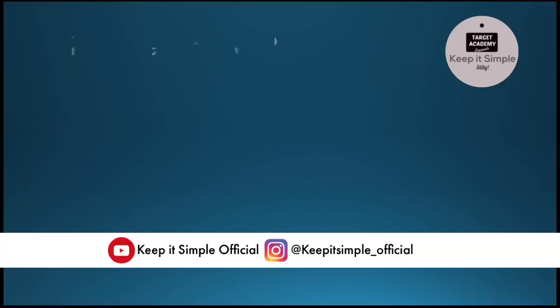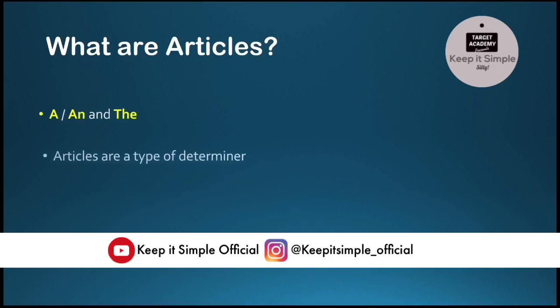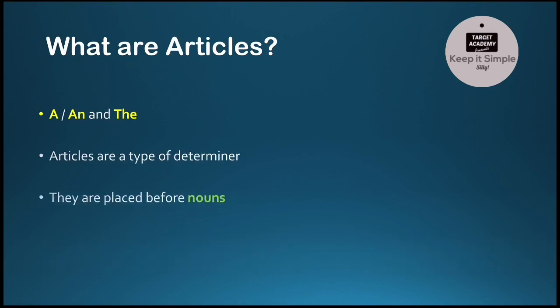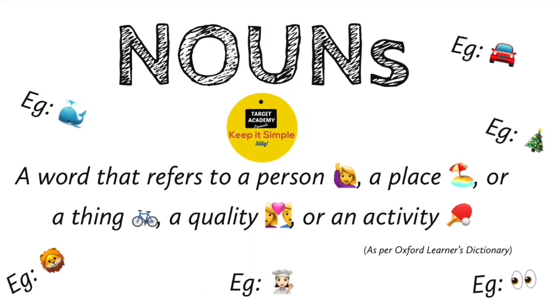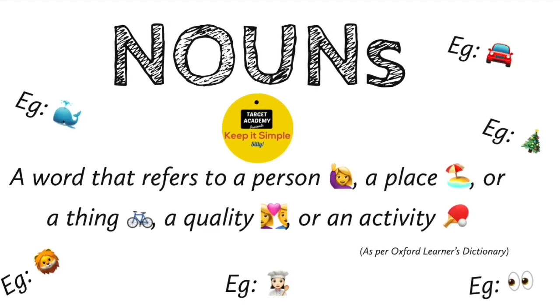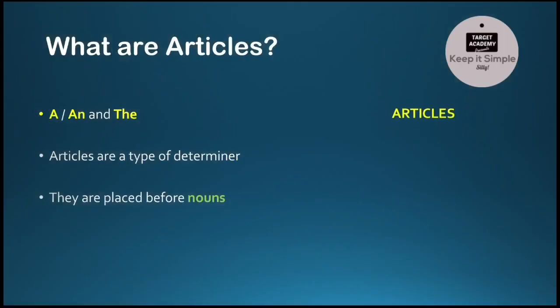First of all, what are the articles? A, an, and the — these articles are a type of determiners. They are placed before nouns. Nouns are the name of a person, place, animal, idea, or thing — all of these are called nouns. So articles are placed before nouns.